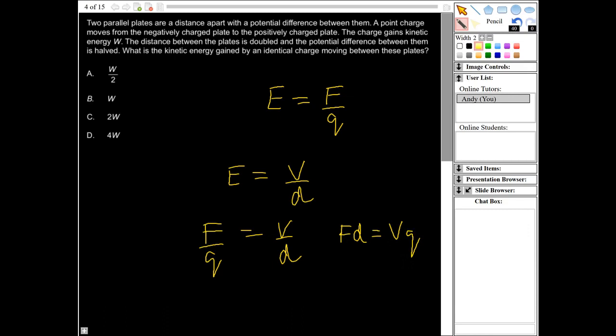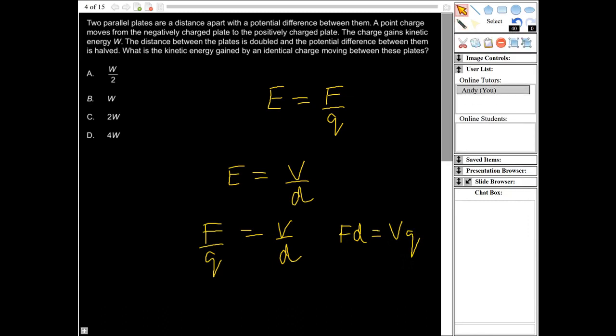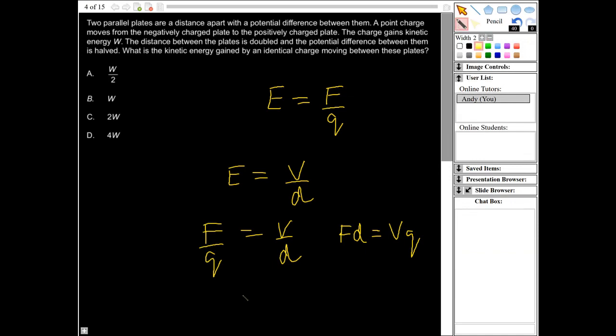So force times distance here, this force times distance, that's going to be equivalent to work, which is going to be also equivalent to kinetic energy. So therefore kinetic energy W is going to equal V multiplied by Q. So that is the potential between the plates multiplied by the charge.